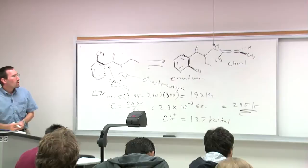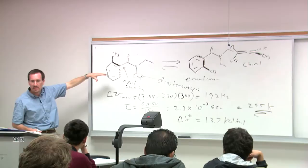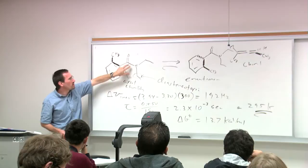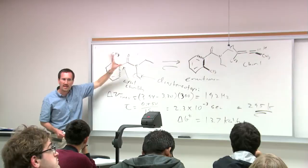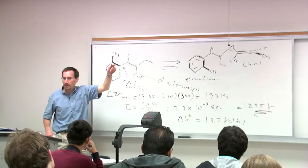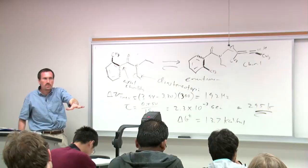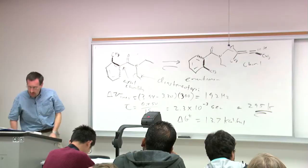At 295 K, plugging in: delta G double dagger equals 13.7 kilocalories per mole. So take a moment to think about this — we've got two processes in this molecule. One is the rotation about the amide bond, which has an 18.3 kcal/mol barrier and doesn't become fast until you heat to 105–110 degrees. The other is the rotation about the aryl–carbonyl bond, which is medium scale at room temperature: cool it down and it becomes slow, heat it up and it becomes fast and invisible. That's 13.7 kcal/mol.